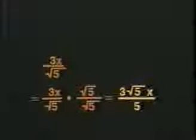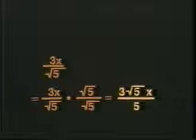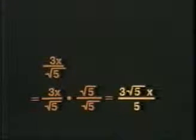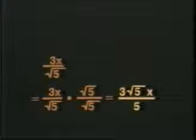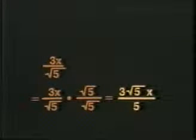I know I'm going to multiply by 1 — the kind I make by dividing the radical by itself, the same number top and bottom. That gives me the fraction in its simplest radical form, and it's easy.